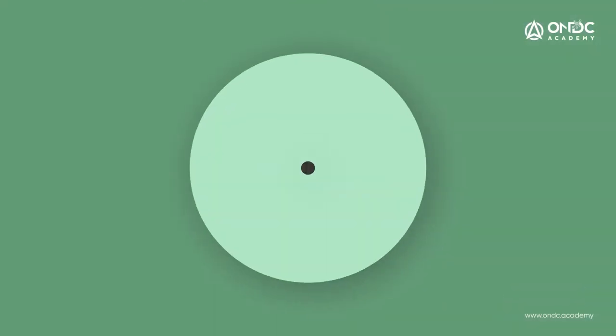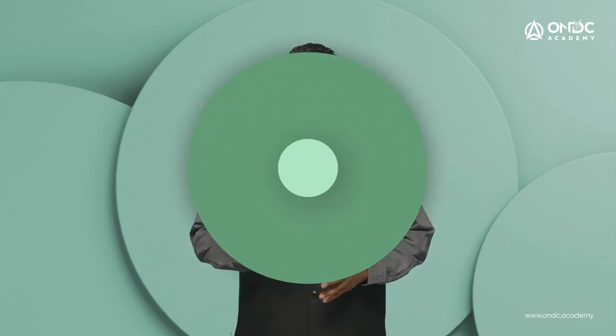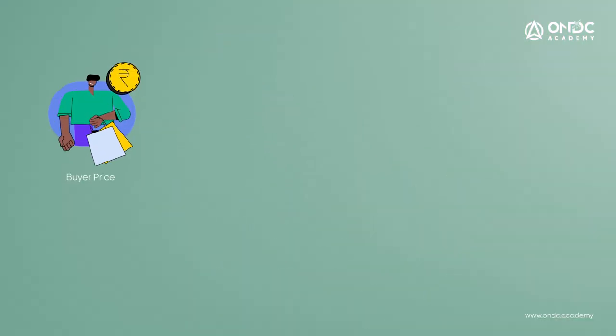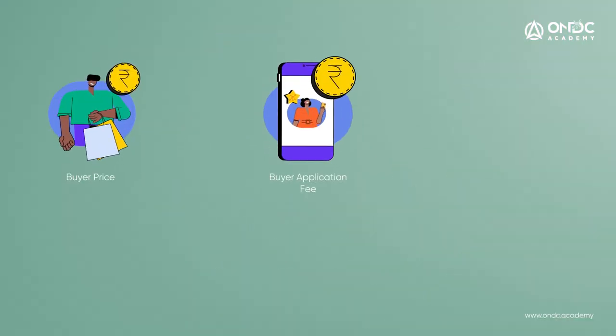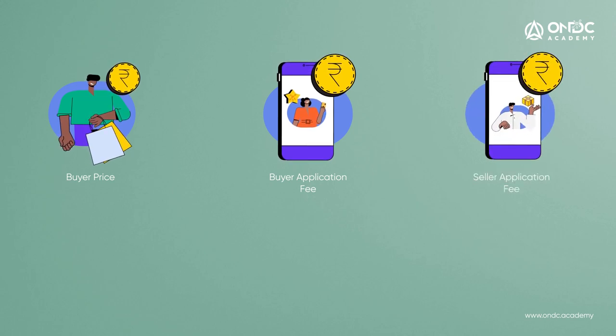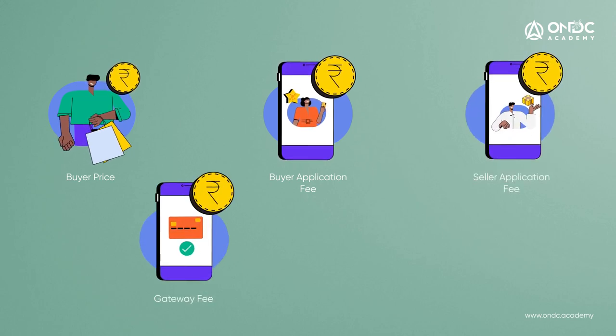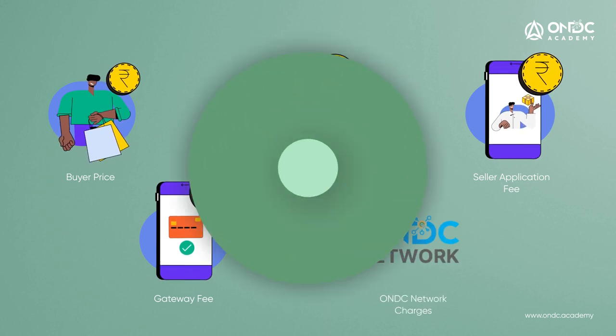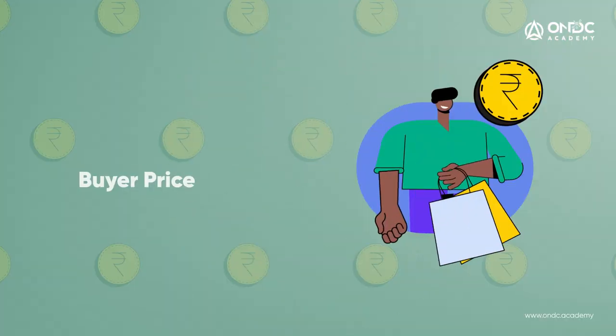Any product or service bought through the ONDC network will always have certain commercial elements, which we've simplified under five broad subgroups: one, buyer price; two, buyer application fee; three, seller application fee; four, gateway fee; five, ONDC network charges. If delivery is paid by the buyer, that will have the same five components as well. Note that in the initial months, gateway fees and ONDC network charges will not be applicable.